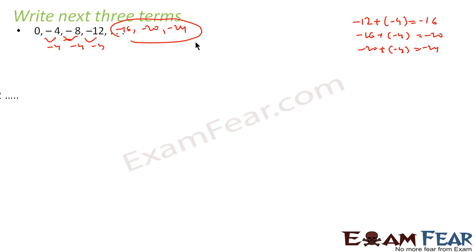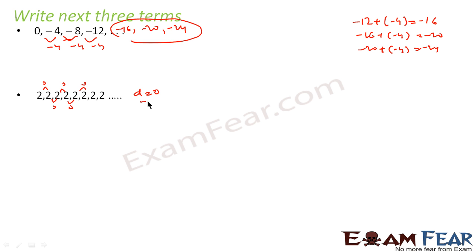One more example: 2, 2, 2, 2. Here the difference is 0 everywhere. Since the difference is 0, we can say it is an AP. The next term will be 2 + 0 = 2. All terms will be 2. If you add 0 to any term, you get 2, so this remains the series 2, 2, 2, 2.